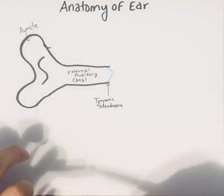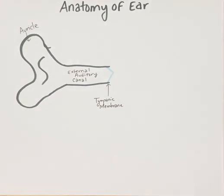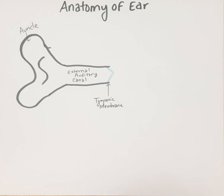This is your tympanic membrane, known as your eardrum. Your tympanic membrane literally amplifies sound waves into the middle ear. Your middle ear is made up of auditory ossicles, which are the smallest bones in the body.